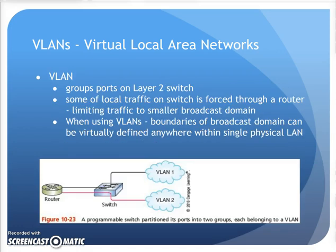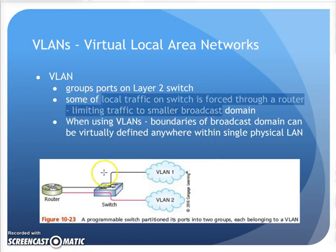VLANs are when I take a group of ports on a layer 2 switch, group them together, and they're now logically a group and act like a small network within the larger network. What you're doing is grabbing those ports on a layer 2 switch and pulling them together into a little piece of the larger network, forcing some of that local traffic to go to a router before it can go anywhere else. It's almost like you're creating that little subnet inside of the switch, but VLANs are actually layer 2.